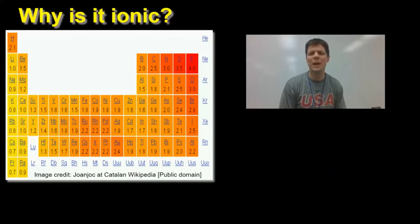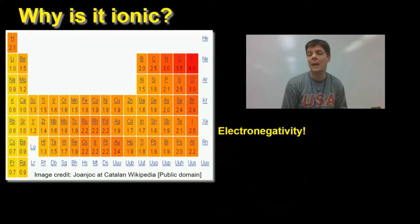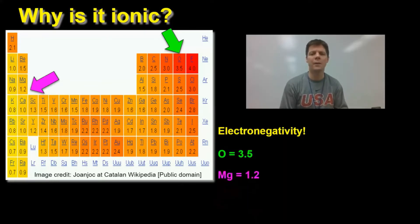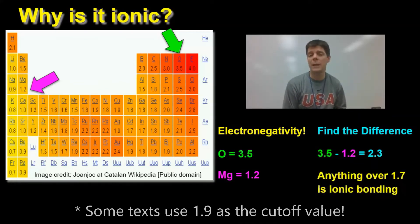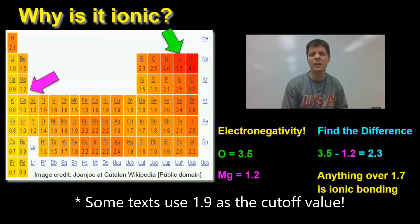Why is magnesium oxide an ionic compound? To answer this, we need to know about electronegativity. This is the pull that atoms exert on electrons. Oxygen has a very high electronegativity, 3.5. The electronegativity for magnesium is 1.2. When we find the difference, 3.5 minus 1.2, we get an answer of 2.3. Now anything over 1.7 is considered to be a bond that is ionic character or an ionic bond.